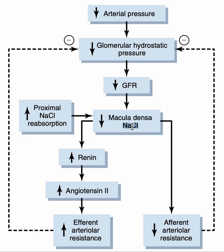Macula densa is a specialized cell that will maintain the delivery of sodium and chloride to the distal convoluted tubule. In short, the macula densa will automatically sense that the delivery of sodium and chloride is low, which means the kidney has a low GFR. So it will try to maintain GFR.